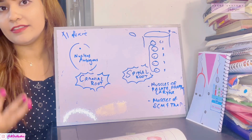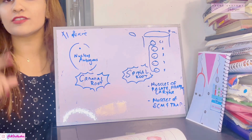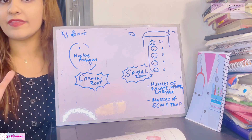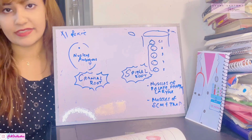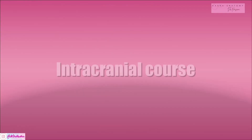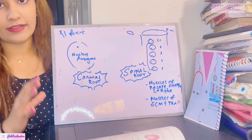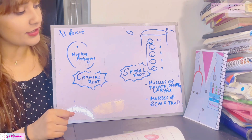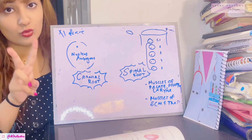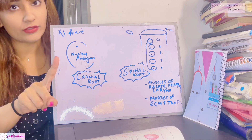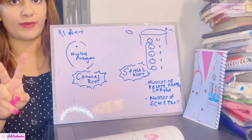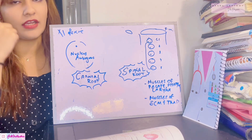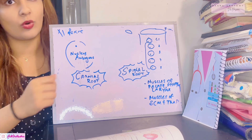Let's talk about the intracranial part first, then we'll move on to the extracranial part. The accessory nerve, also known as the XI nerve, has two roots — one is the cranial root and one is the spinal root. The cranial root comes from the brain and the spinal root comes from the spinal cord.